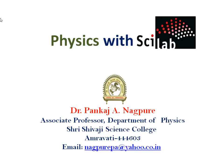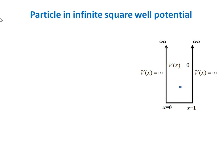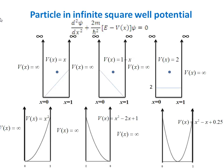Welcome back on day 11 of the course Physics with SciLab. Yesterday we saw the solution of the Schrödinger equation for a particle in an infinite square well and obtained the energy eigenvalues and eigenfunctions with zero potential energy in the well. Today I will show you the effect of potential energy on the eigenvalues and eigenfunctions.